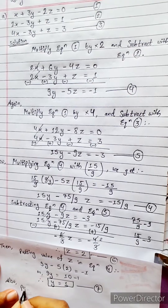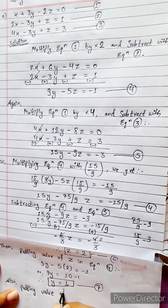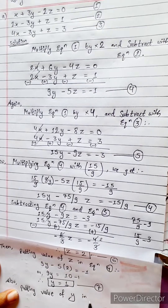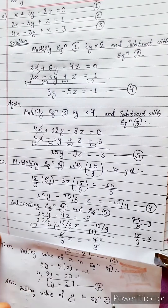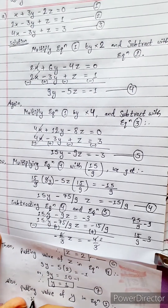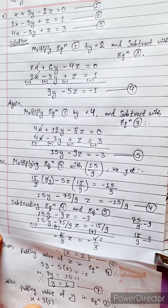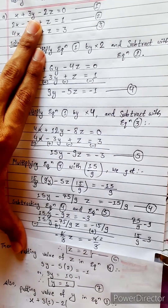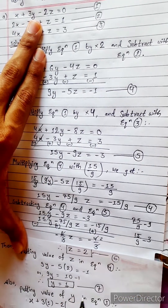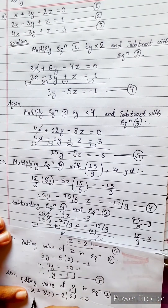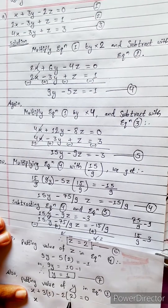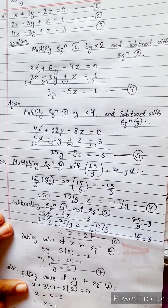Putting the value of y into equation 1: x + 3y - 2z = 0. Substituting z = 2: x + 3(1) - 2(2) = 0, so x + 3 - 4 = 0, giving x = 4 - 3. Therefore x = 1.